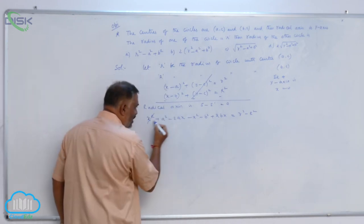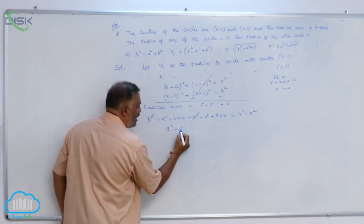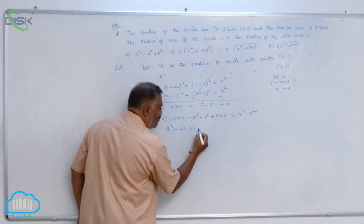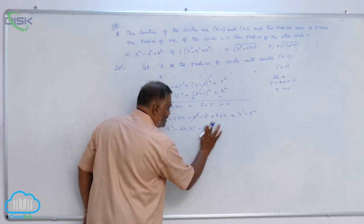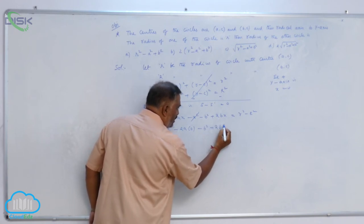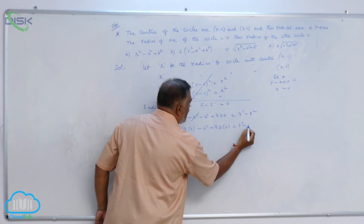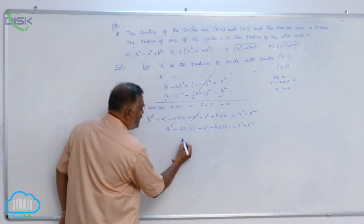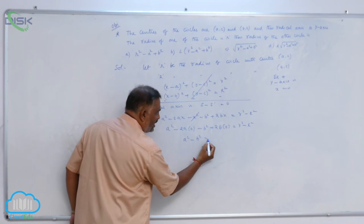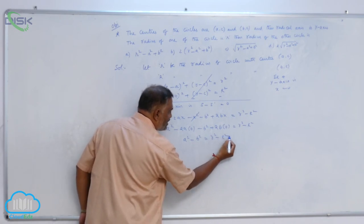Of course, x² gets cancelled here. a² - 2a(0) - b² + 2b(0) = r² - R². Now, a² - b² = r² - R².